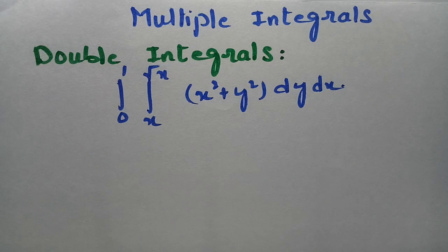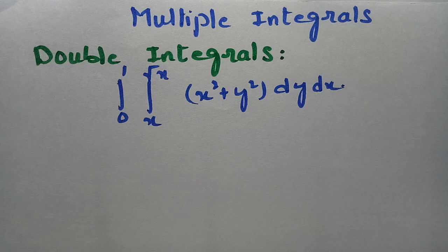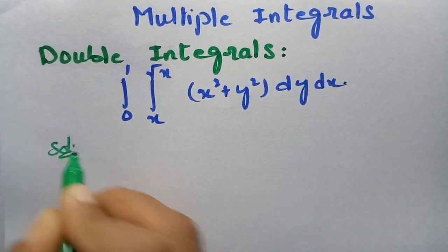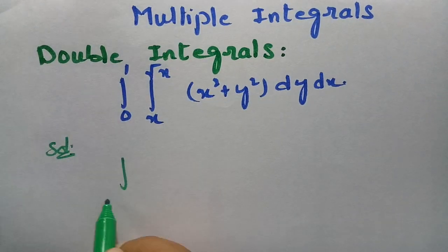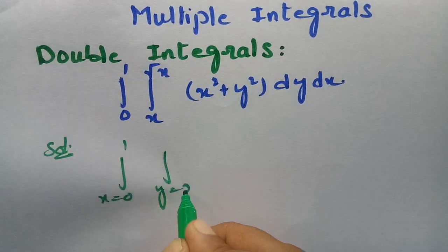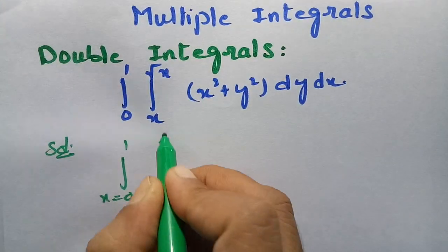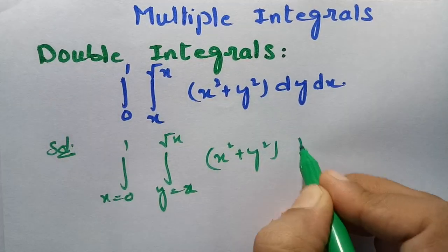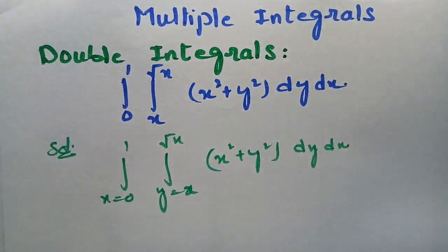I really want you to learn from this video and I can assure that you are going to be benefited by finding an easy way to solve the problem today. This problem is from multiple integrals and I have chosen double integral today. The x limits are from 0 to 1 and y limits are from x to root x, and the integrand is x square plus y square, dy dx.